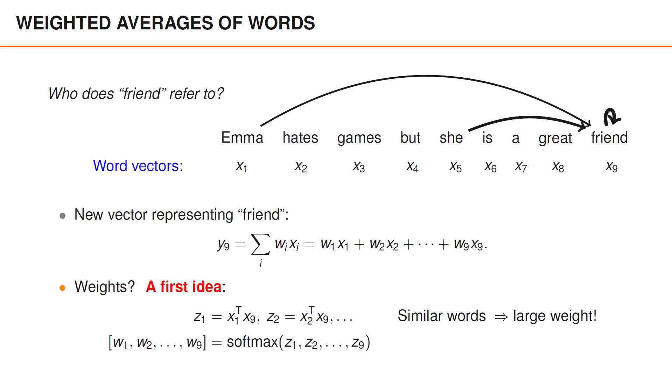A first possibility could be to obtain a series of z values by simply computing the inner product between x9 and the other word embeddings. If the original word embeddings for the words she and friend are sufficiently similar,